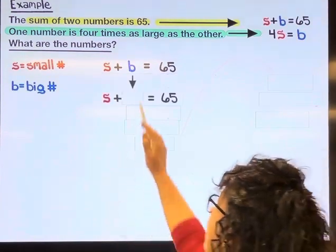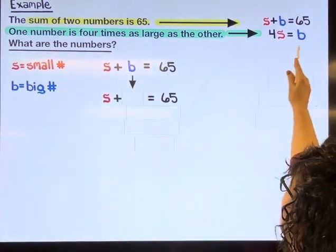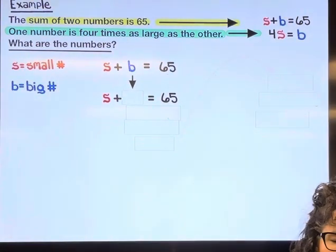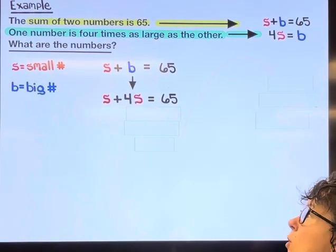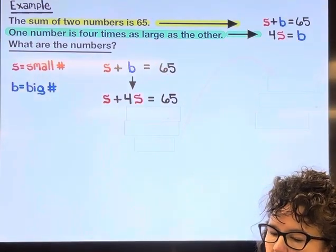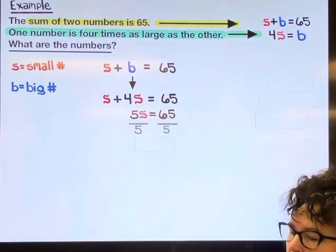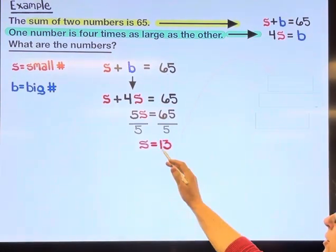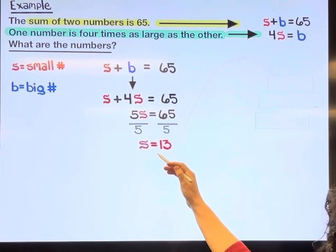So replacing that with 4s, then s plus 4s makes a total of 5s. Divide both sides by 5 and I end up with 13. Now that I know that the small number is 13, I'm going to come back into the other equation.